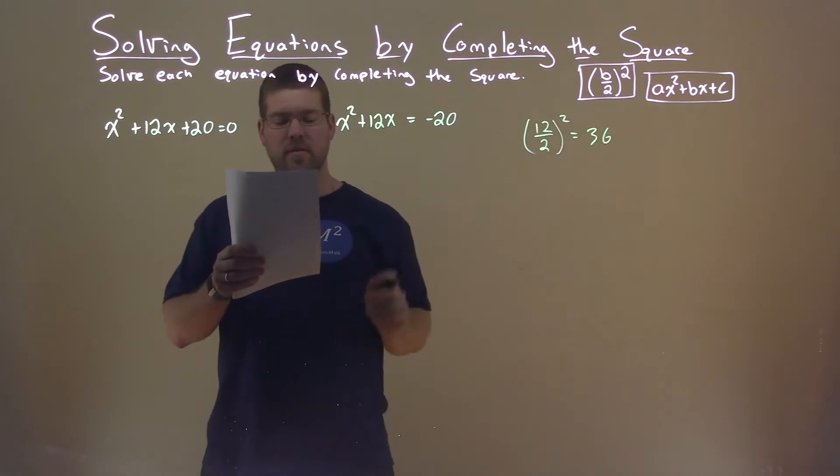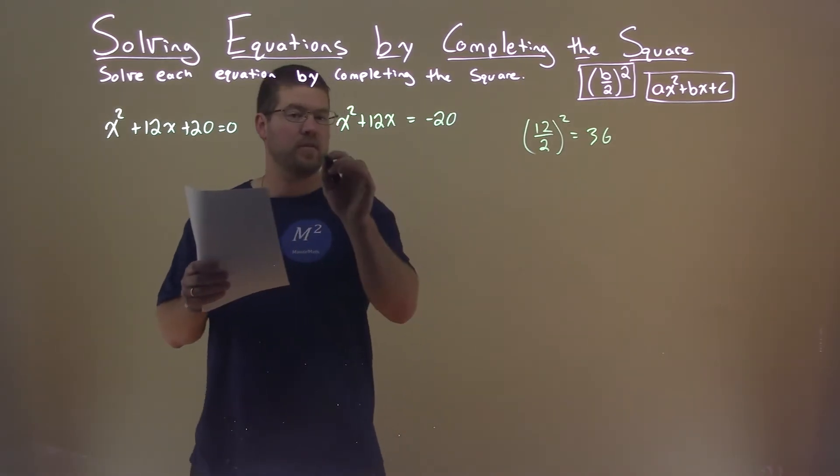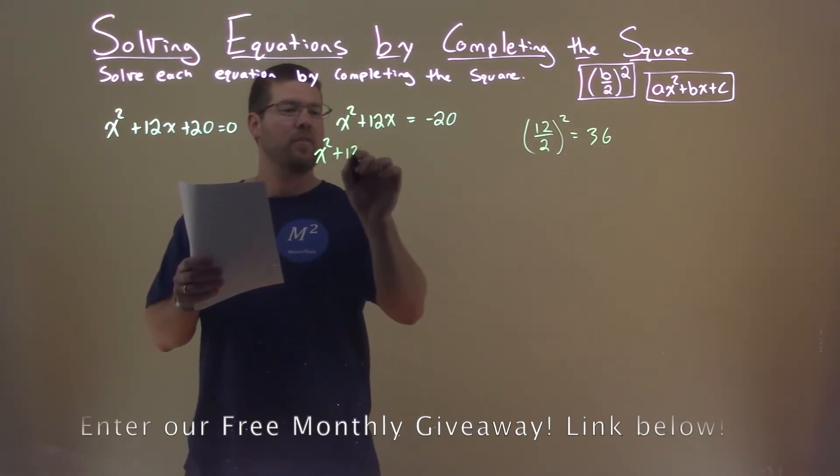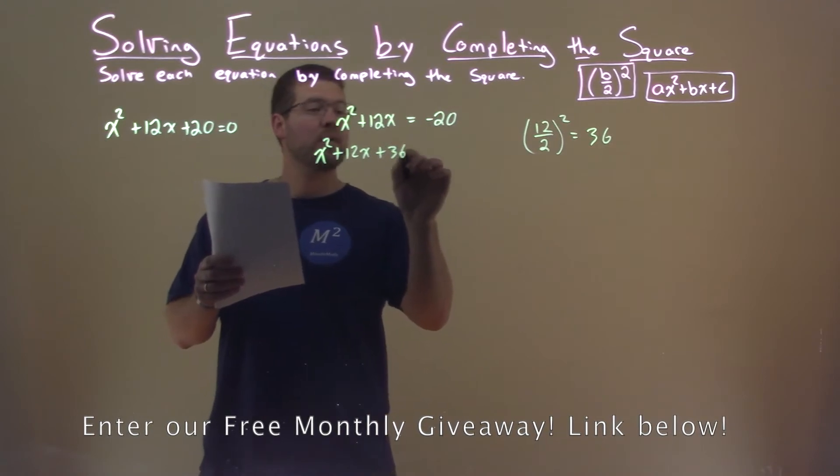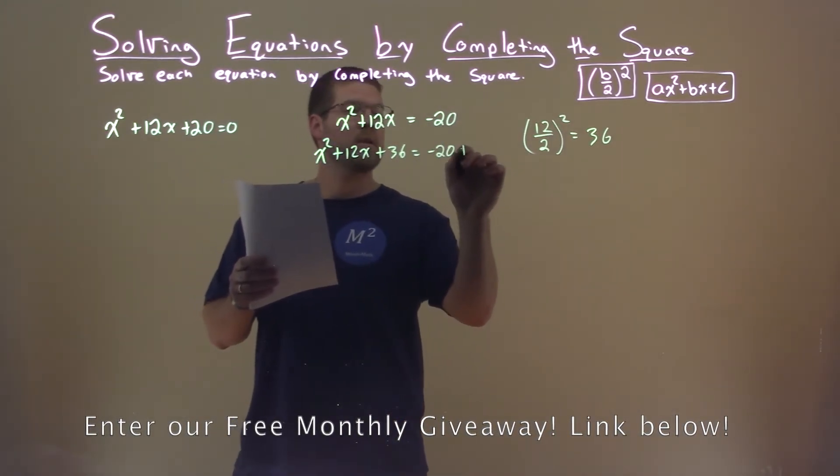So we're going to add 36 to both sides of the equation now. x squared plus 12x plus 36 equals negative 20 plus 36.